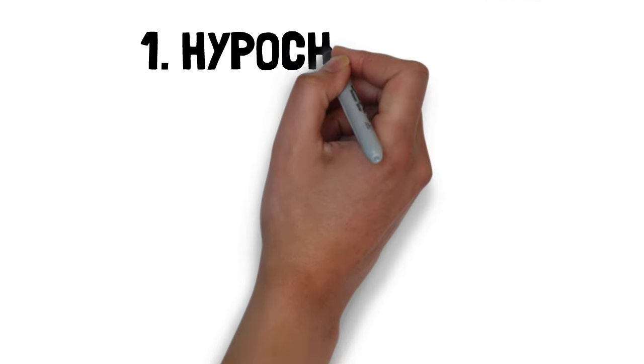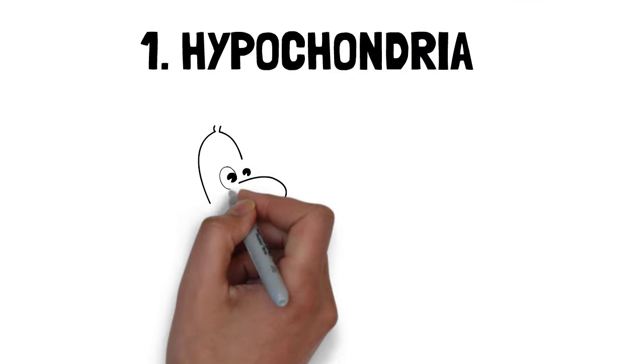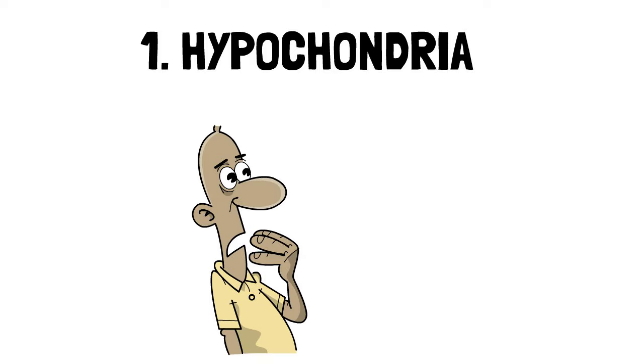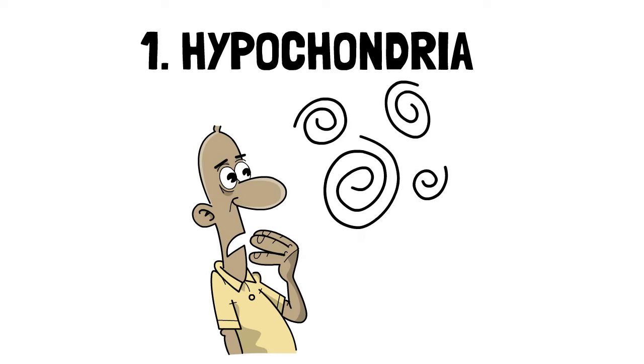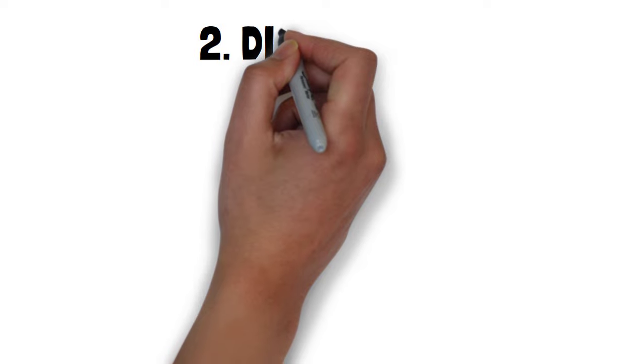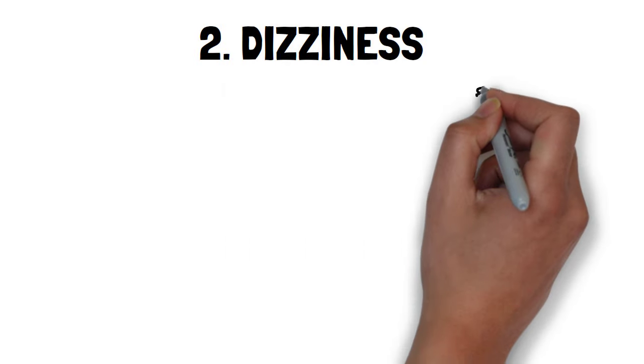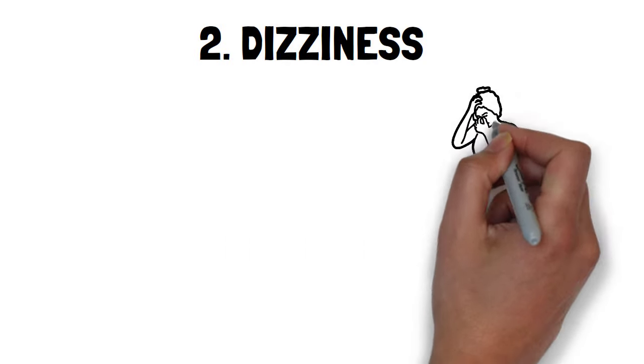Number one, hypochondria. Probably the worst because that is what makes all the following symptoms so much more intense and is the thing that seems to keep us in this anxiety loop. Number two, dizziness. That was a big one for me and it came in many different forms and sensations.